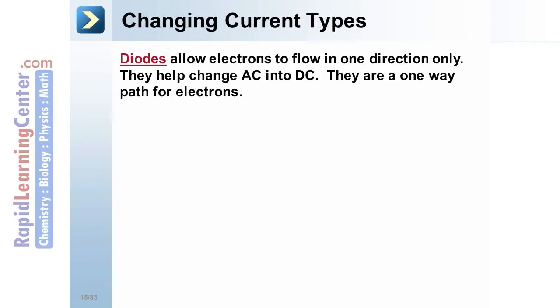Changing current types. To facilitate the previous process, diodes are used. They allow electrons to flow in only one direction. This helps change AC into DC. This is a one-way path for electrons.